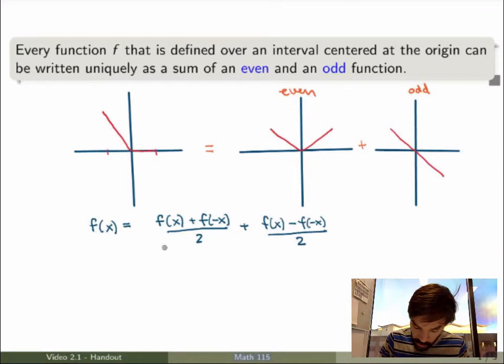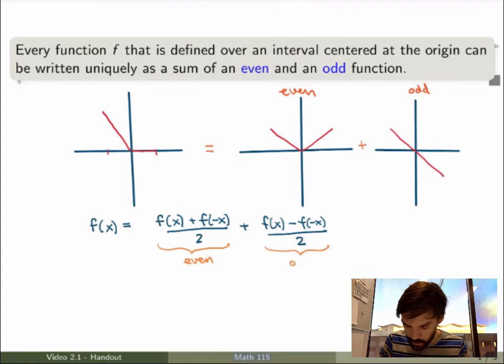But what's key here is that once you do that you can realize that this will always be even, regardless of what the function f is, and this will always be odd. It's actually a nice exercise to prove that. But for arbitrary f, this will always be true, so you have here a unique decomposition of f as a sum of an even and an odd function.